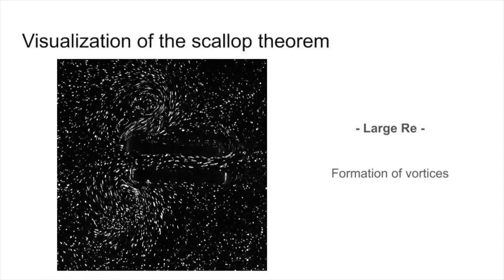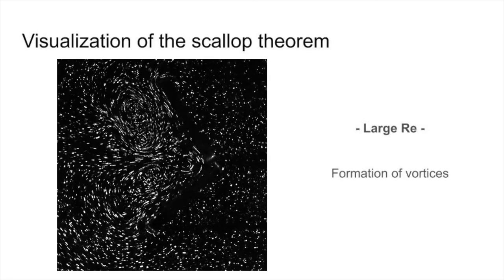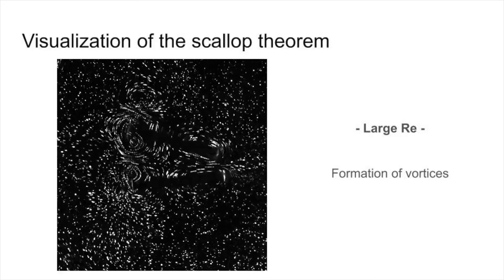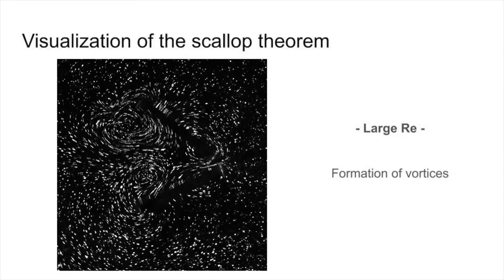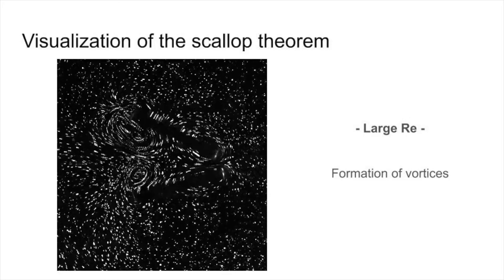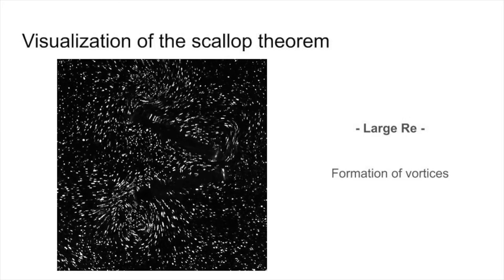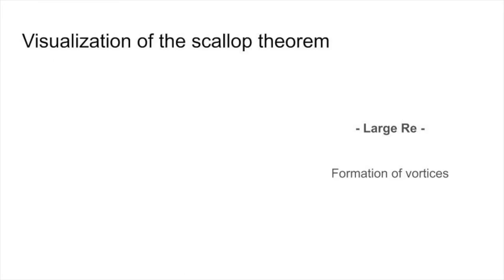As we can see here, the motion of the two flaps at a large Reynolds number results in the formation of vortices. These vortices are the result of inertial forces, which lead to propulsion to move the scallop throughout the fluid, in the same way the motion of our arms or a fish's tail allows for swimming.